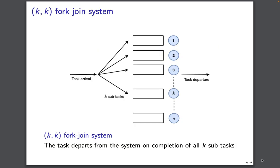This is what a typical fork-join system looks like. Whenever there is a task arrival, it is subdivided into k sub-tasks and assigned to any k servers from the existing n servers. The task is deemed to be completed only when all the k sub-tasks are completed.